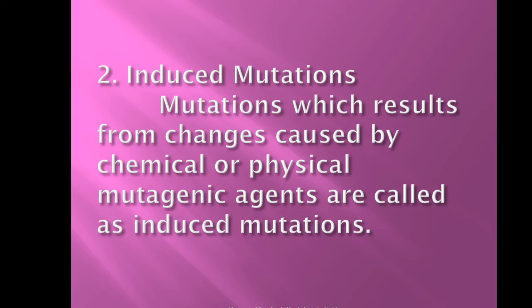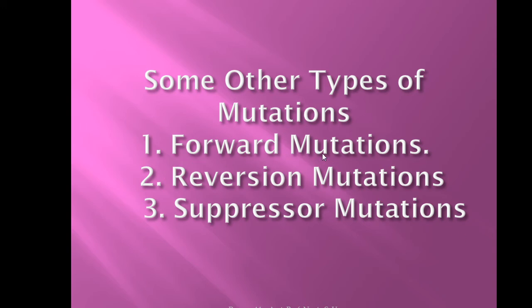The second main type of mutation is induced mutation. Induced mutations are those which result from changes caused by chemical or physical mutagenic agents. Spontaneous mutations occur naturally, but induced mutations are induced artificially with the help of mutagenic agents, which may be physical or chemical. Mutations caused by such chemical or physical mutagenic agents are called induced mutations. Other types of mutations include forward mutations, reversion mutations, and suppressor mutations.